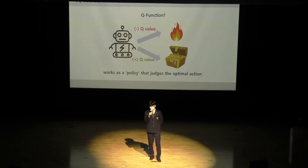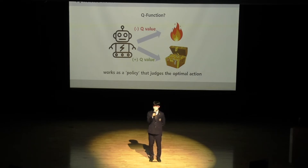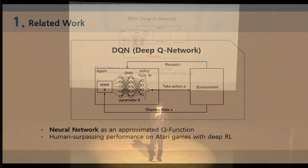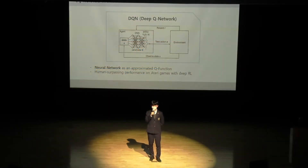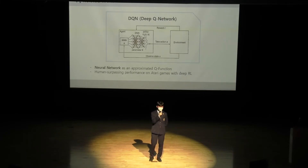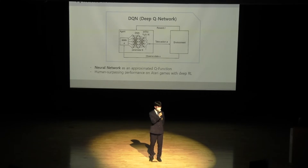In reinforcement learning, we call such a guidebook a policy. The next concept is Deep Q-Network, or DQN for short. It is an advanced version of Q-learning where we replace the Q-function with a deep neural network, allowing us to handle more complicated tasks compared to conventional Q-learning.